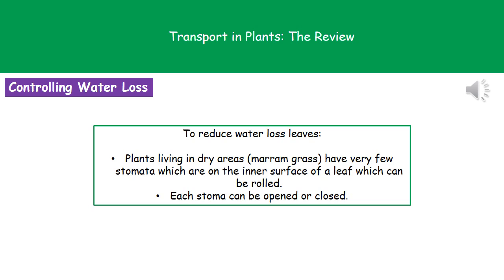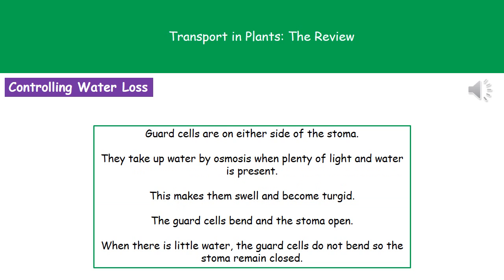The other thing our plants can do is, around those stomata, remember we've got these guard cells, and they can control whether the stomata is open or closed. They're located on either side of the stoma. As water is taken in by osmosis to those guard cells — which always occurs when there's plenty of light and water available — they swell up and become turgid. As a result of that, those guard cells bend, and that means that the stomata are open.